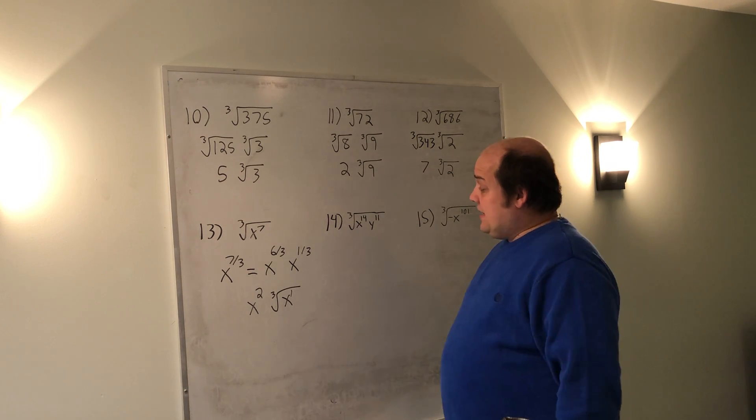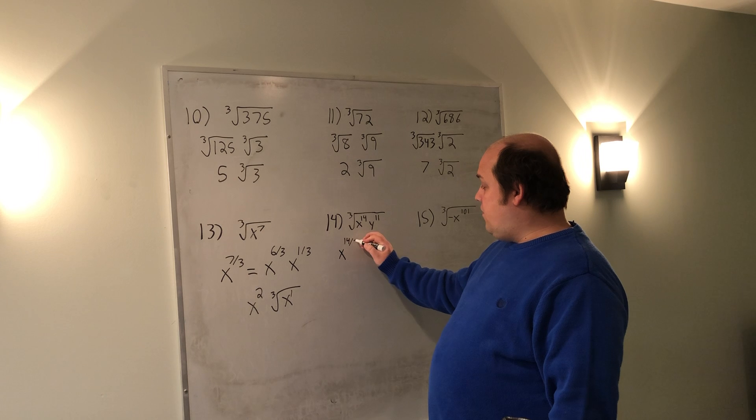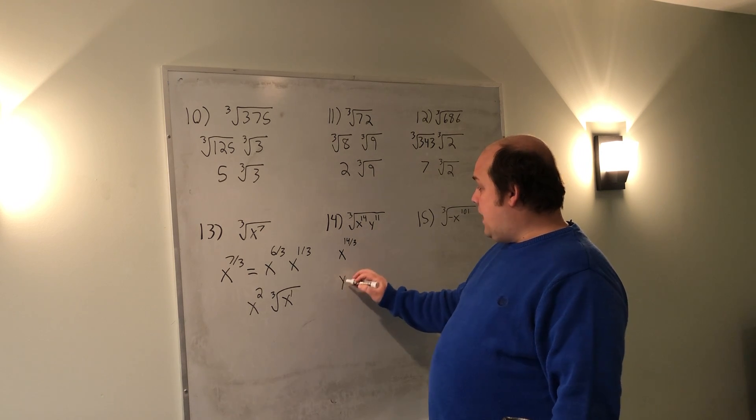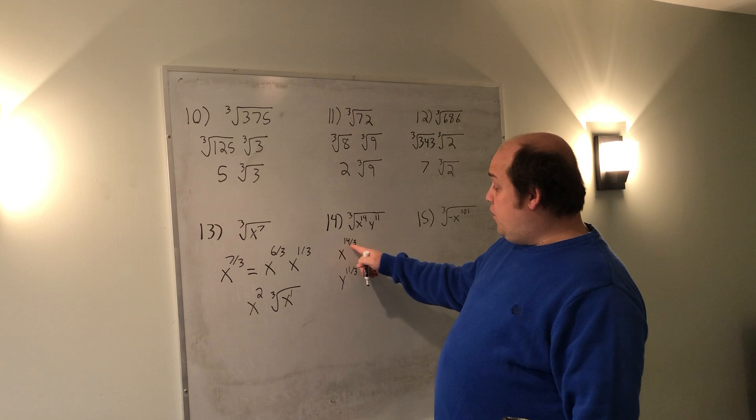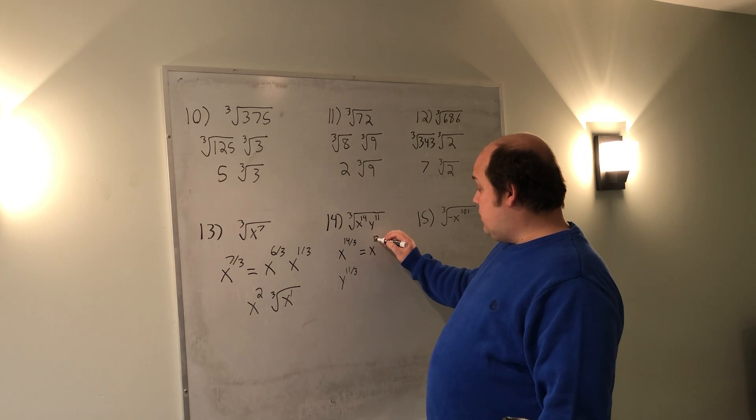When I go to do number 14, I need to look at two different variables. I have x to the 14/3. I also have y to the 11/3. With 14/3, 12 is the biggest number that's a multiple of 3 that goes in, and that leaves behind 2.